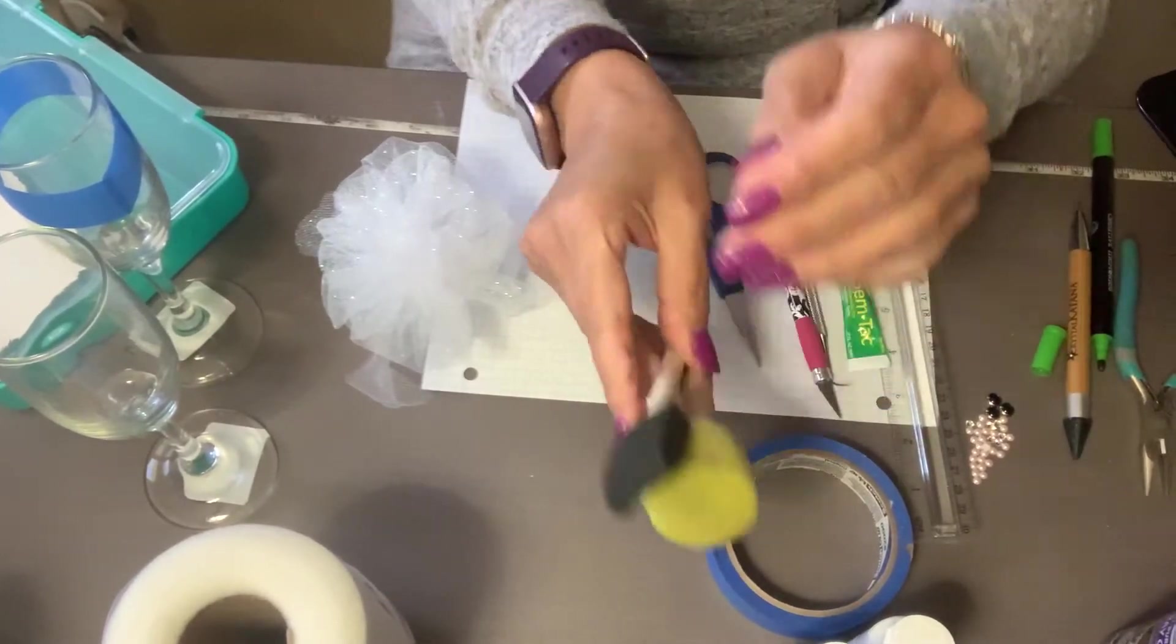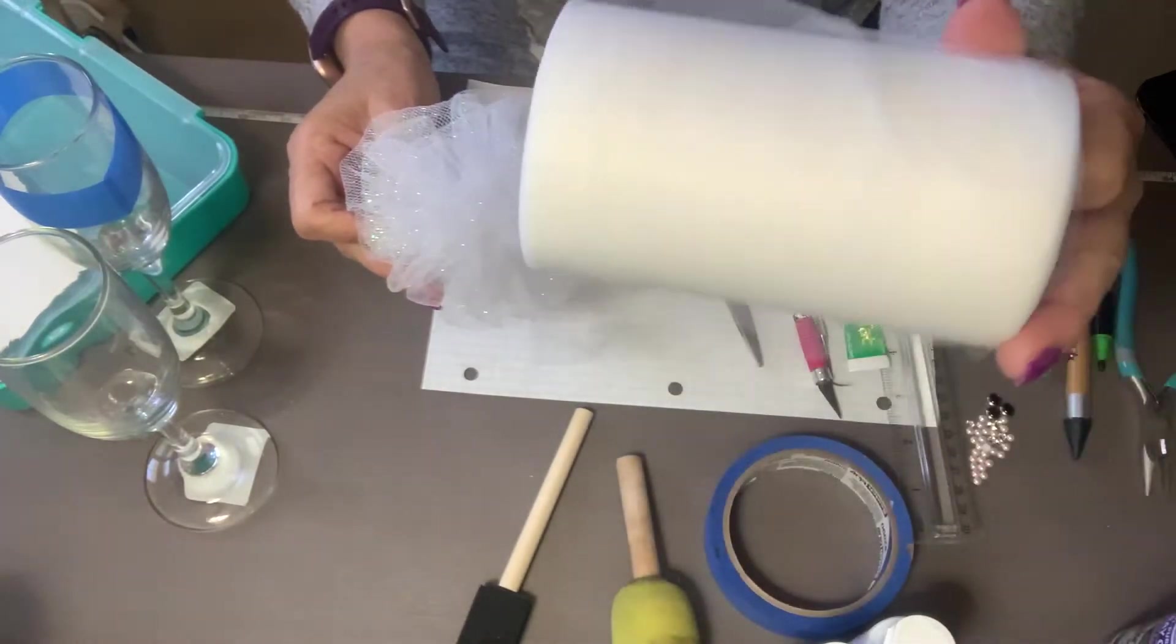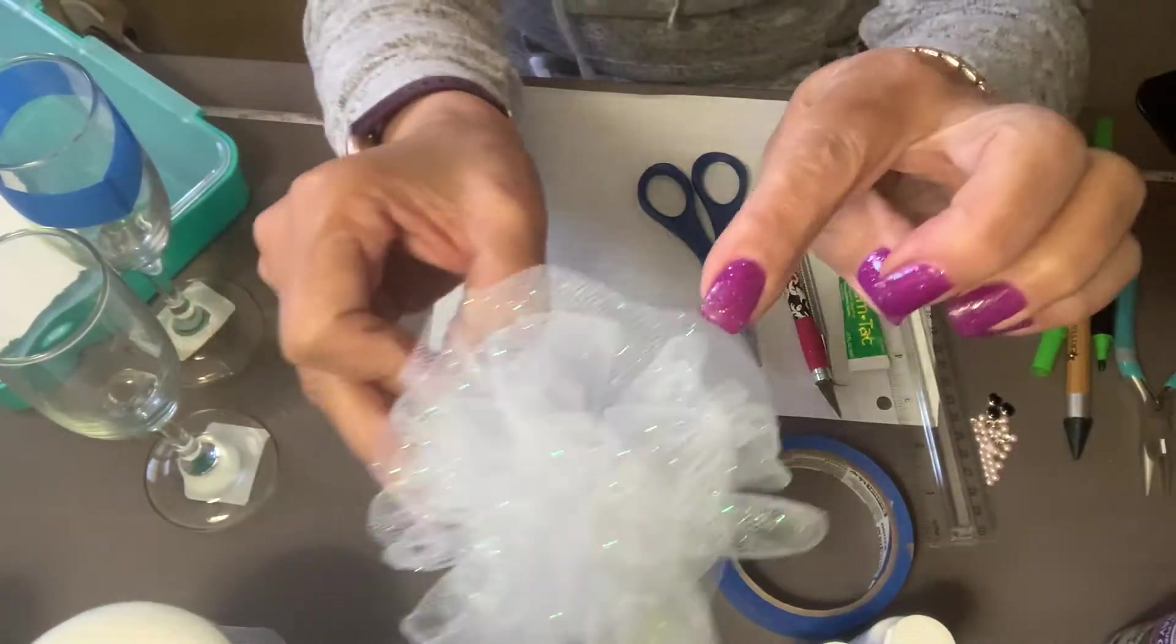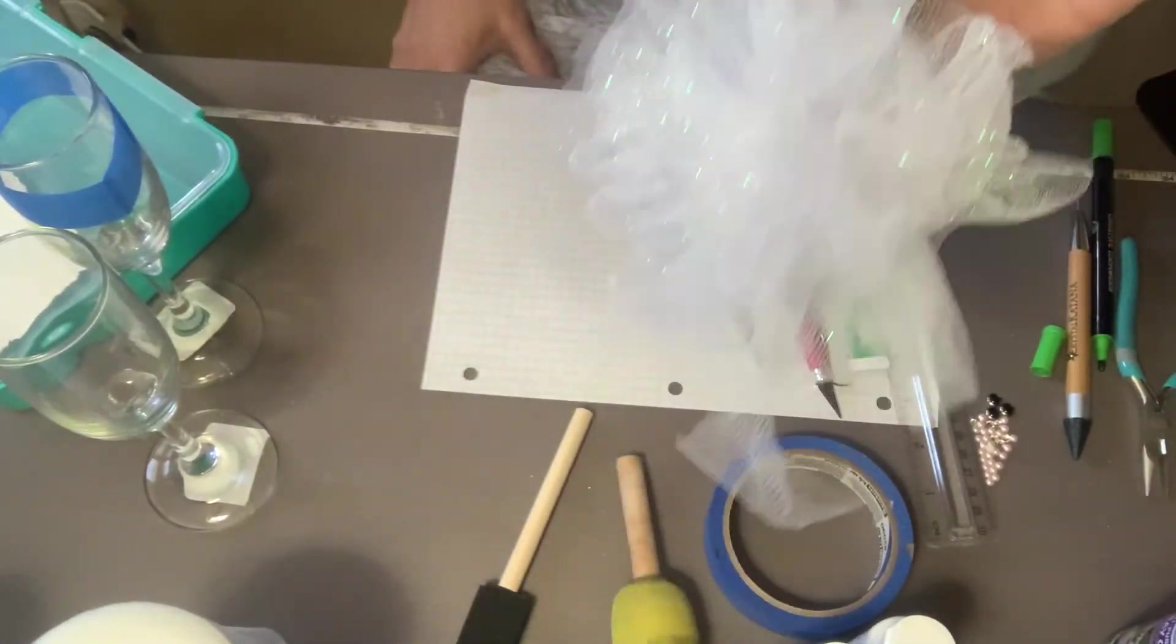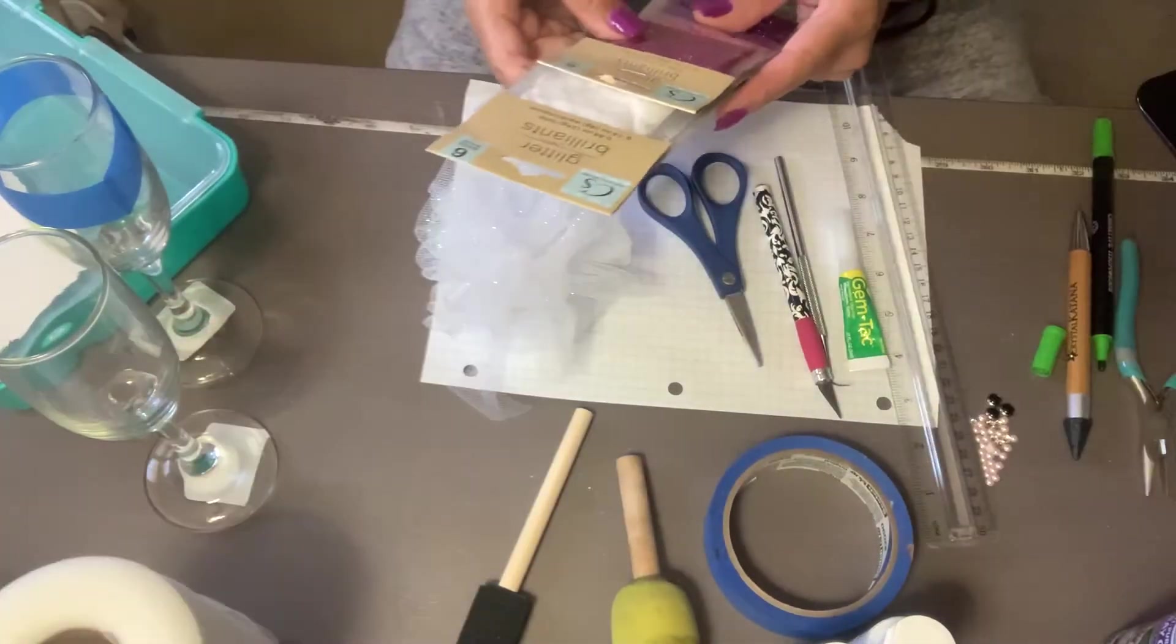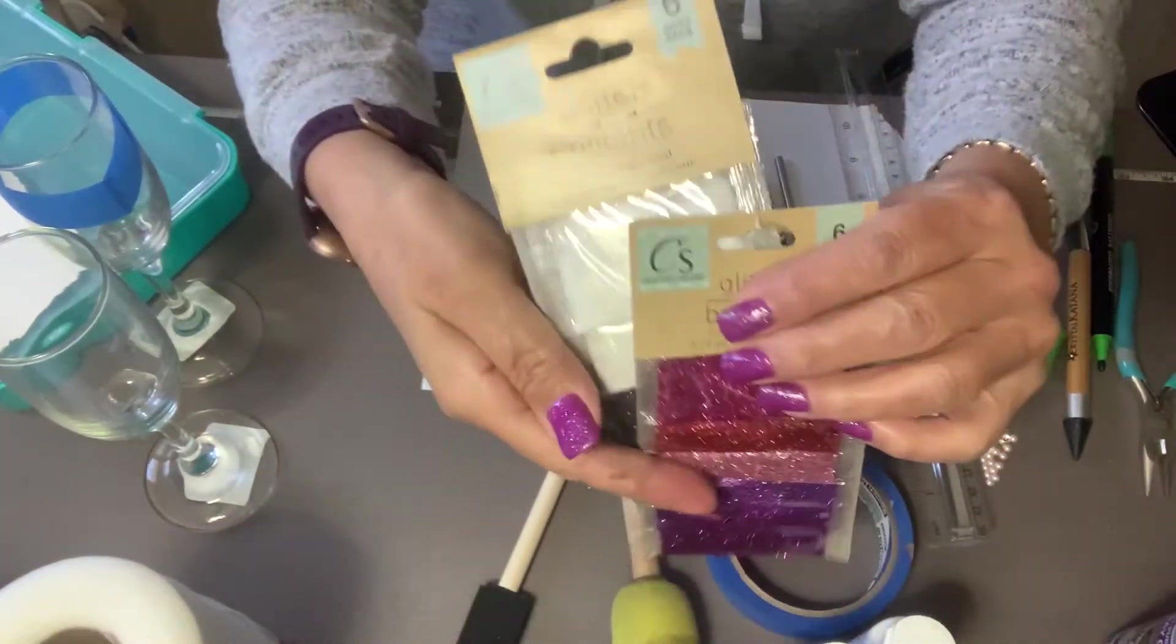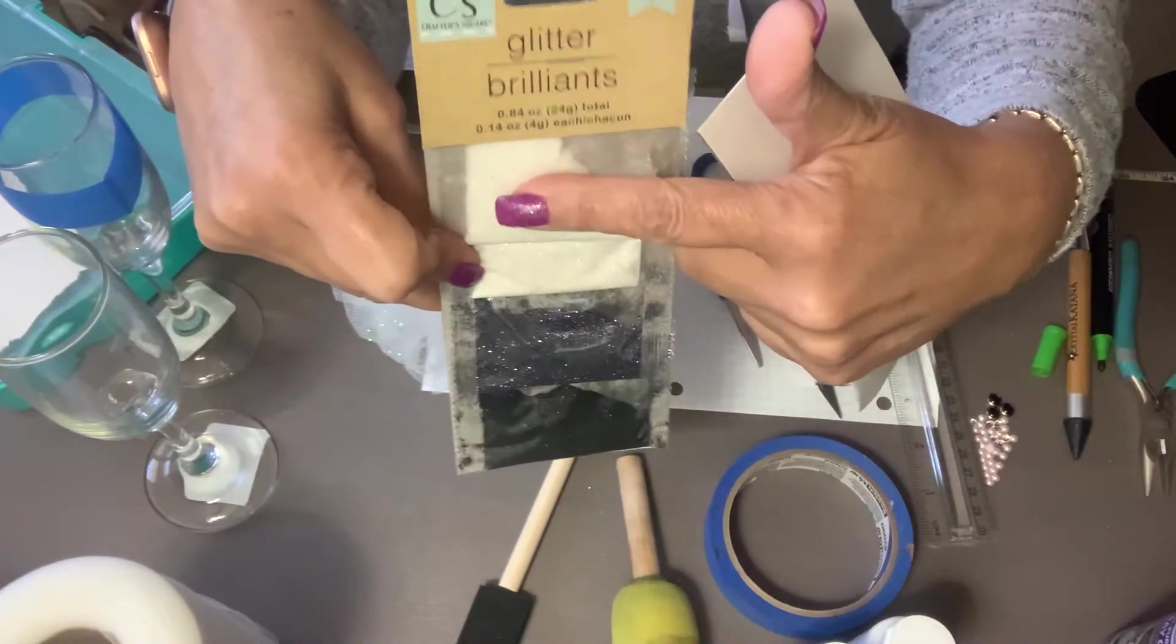We're going to also need some tulle because we're going to make this nice ball. And I'm experimenting with some sparkle, so I'm going to be using some sparkle once I finish making the ball. I got them at the Dollar Tree as well. So I'm going to be using this white one.